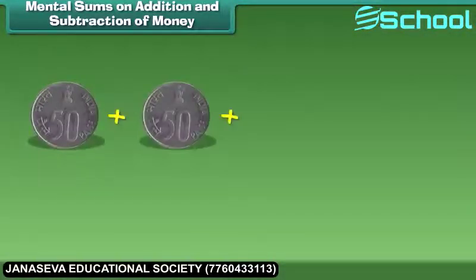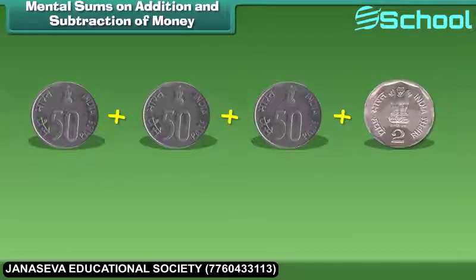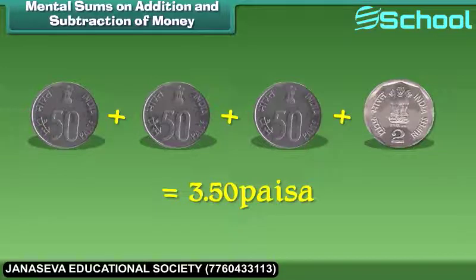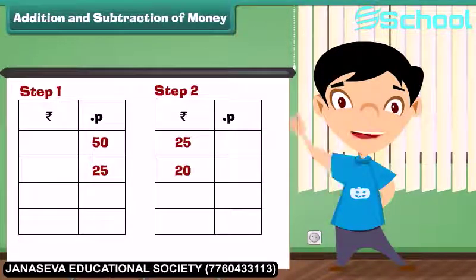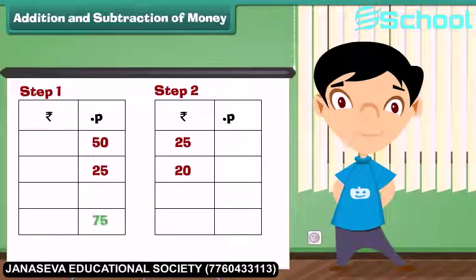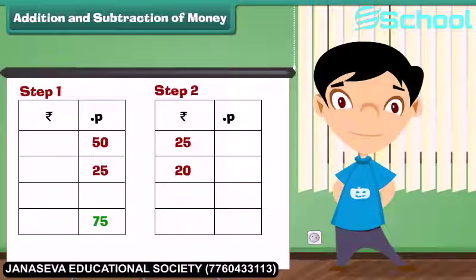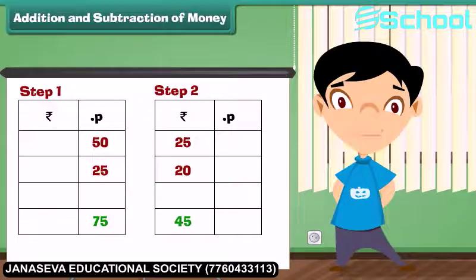Now I have three 50 paise coins and a 2 rupee coin, which is equal to 3 rupees 50 paise. Let us learn how to add 25 rupees 50 paise and 20 rupees 25 paise. Step 1: add the numbers in the paise column — 50 plus 25 equals 75 paise, write 75 under the paise column. Step 2: add the numbers in the rupees column — 25 plus 20 equals rupees 45, write 45 under the rupees column.